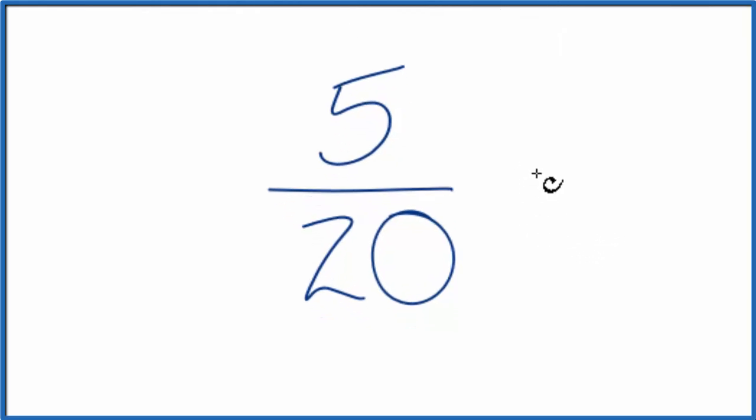To do that, we need to find a common multiple. I know that 5 goes into 20 four times. So 20 is divisible by 5, and 5 is divisible by 5.